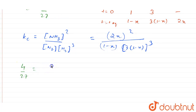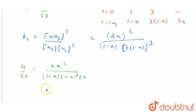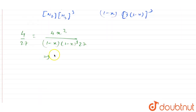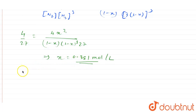So 4/27 equals 4x² divided by (1 − x) times (1 − x)³ times 27. Solving this equation gives the value of x as 0.381 mole per liter.